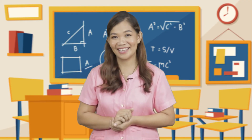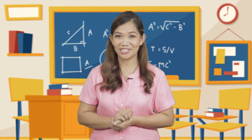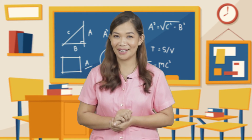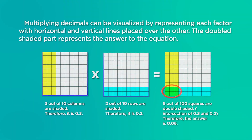Kids, this is how you can visualize multiplication of decimal numbers using pictorial models. Multiplying decimals can be visualized by representing each factor with horizontal and vertical lines placed over the other. The double-shaded part represents the answer to the equation. 3 out of 10 columns are shaded, therefore it is 0.3. Times 2 out of 10 rows are shaded, therefore it is 0.2. Equals 6 out of 100 squares are double-shaded — the intersection of 0.3 and 0.2 — therefore the answer is 0.06.